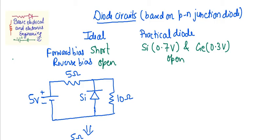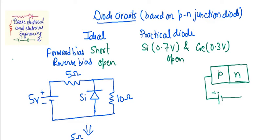For those not aware of PN junction biasing: if we apply positive supply to the P side and negative supply to the N side, it is forward bias. If we apply negative to the P side and positive to the N side, it is reverse bias. Before analyzing any diode circuit, first check whether the diode is in forward bias or reverse bias.